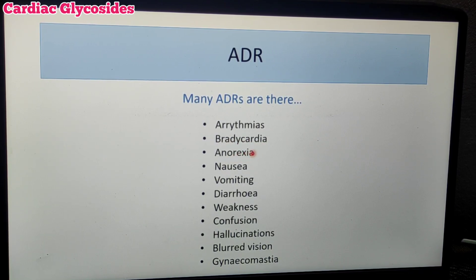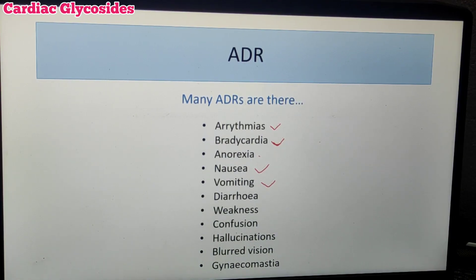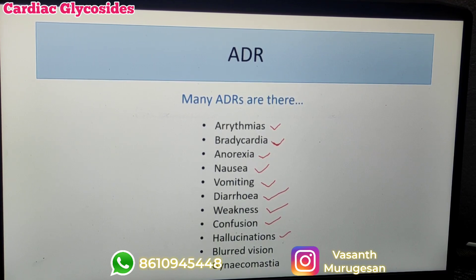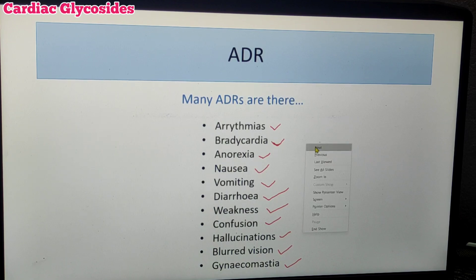Additional adverse effects include anorexia, nausea, vomiting, diarrhea, and weakness. CNS effects include confusion, hallucination, and blurred vision. Gynecomastia is also reported as an adverse effect of Cardiac Glycosides.